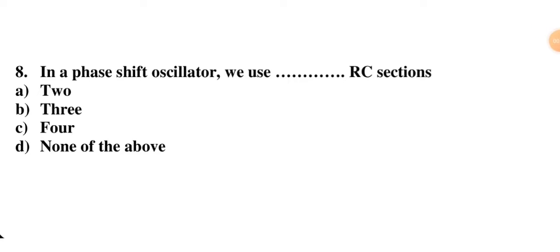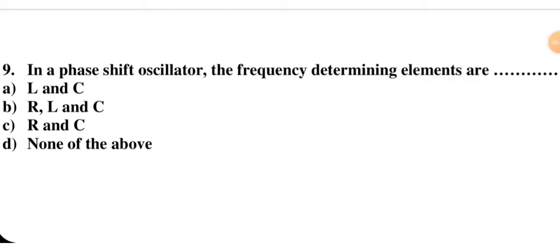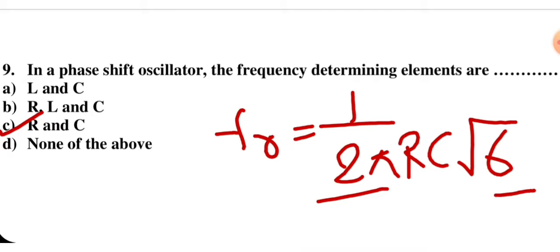In the phase shift oscillator, three RC sections are used, and there is a phase difference of 180 degrees between input and output voltage. To achieve 180-degree phase shift, three RC sections are used, with every section providing 60 degrees of phase shift. The frequency-determining elements in a phase shift oscillator are R and C, and the resonance frequency formula is fr = 1 / (2π·RC·√6). So option C is correct.